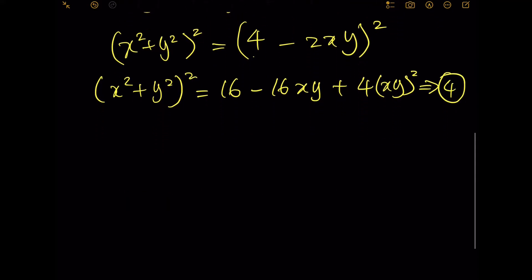On the other hand, (x^2 + y^2)^2 is actually equals to x^4 + 2(xy)^2 + x^2... plus y^4. Make a rearrangement.